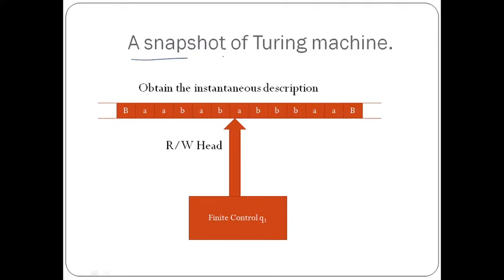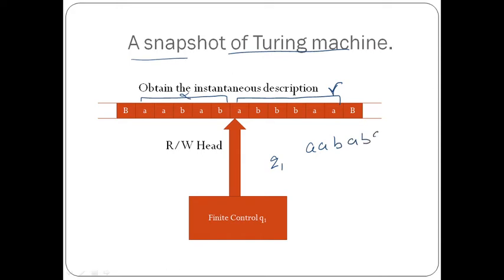Example: A snapshot of a Turing machine is given; obtain the instantaneous description. The input string is A, A, B, A, B, A, B, B, B, B, A, A. The portion before the read-write head is α = A, A, B, A, B, and the current state is Q1. The remaining portion γ = A, B, B, B, A, A. So the ID is written as: A, A, B, A, B, Q1, A, B, B, B, A, A.